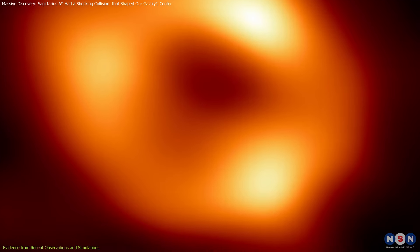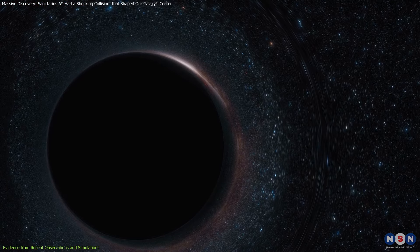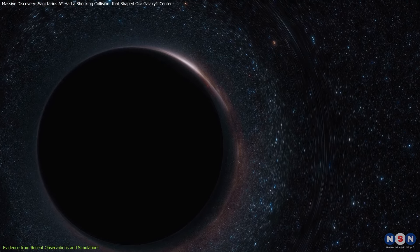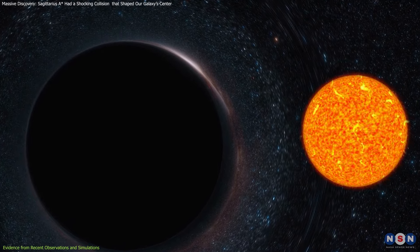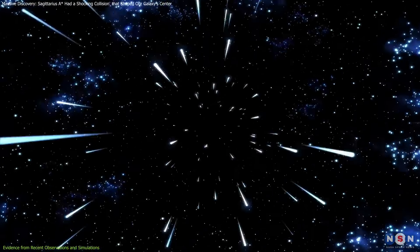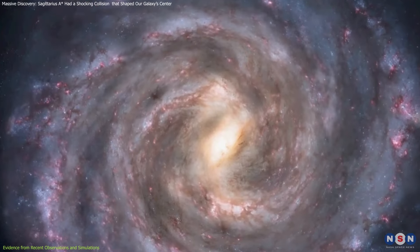Sagittarius A-Star is not your run-of-the-mill black hole. It is a supermassive black hole with a mass of about four million times that of our Sun, situated roughly 27,000 light-years from Earth at the heart of the Milky Way.